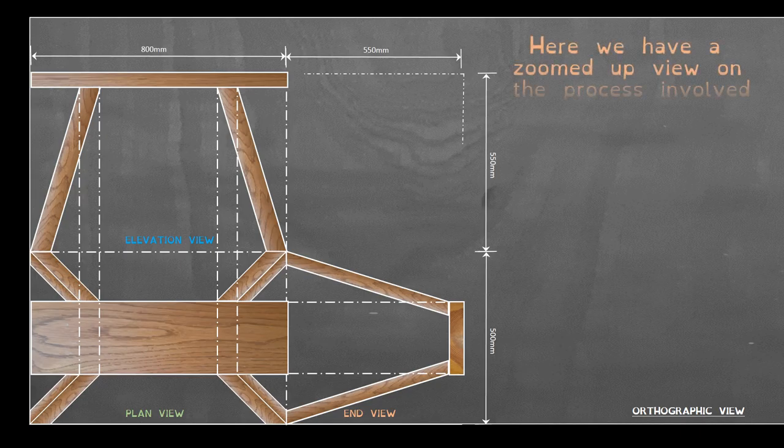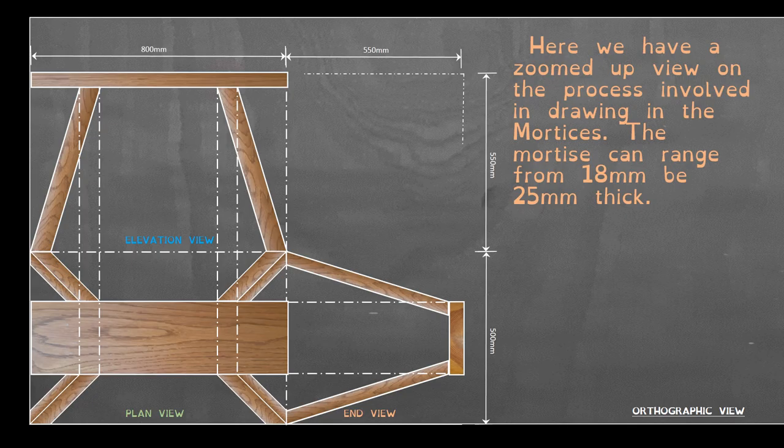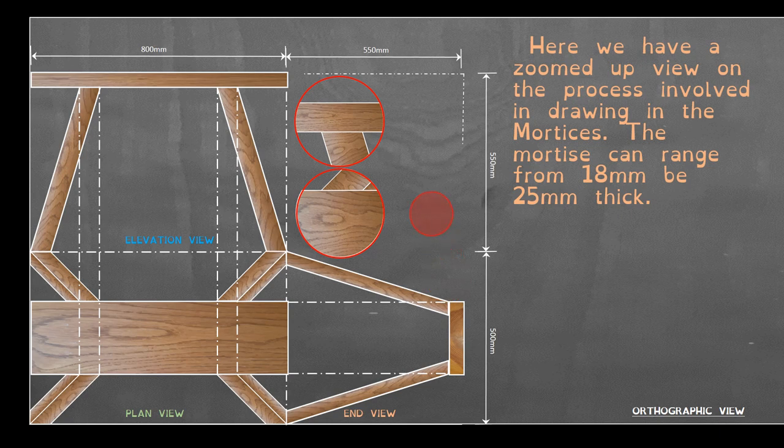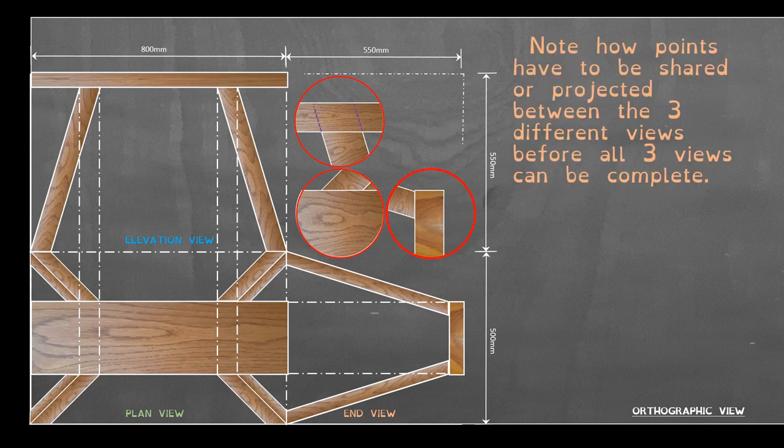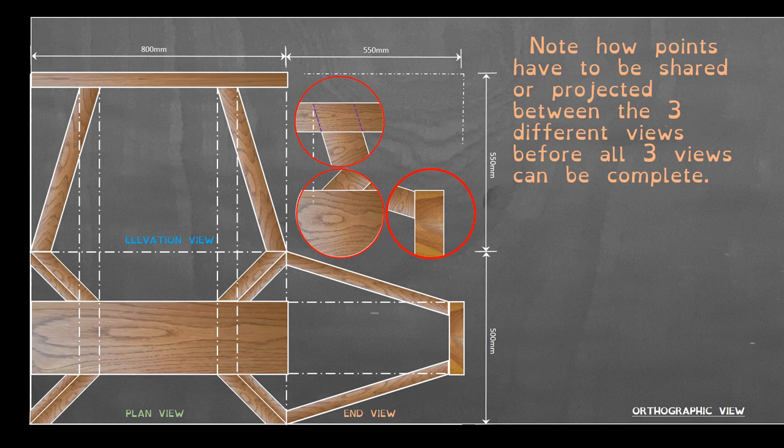Here we have a zoomed up view on the process involved in drawing in those mortises. The mortises can range from 18 to 25mm thick. Note how points have to be shared or projected between the 3 different views before all 3 views can be completed.